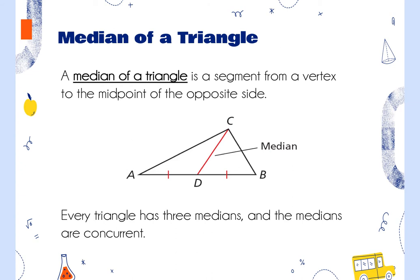The median of a triangle is the segment that goes from a vertex to the midpoint of the opposite side. Think of the median in a road — it's the middle. There's no perpendicular part to this, so it's not going to be a right angle. It goes from the vertex to the opposite side at its midpoint. Every triangle has three medians and the medians are concurrent — they meet at a point. CD here is a median.